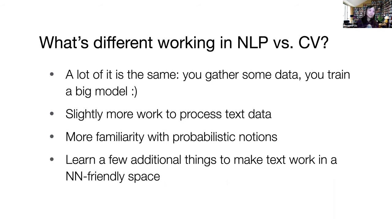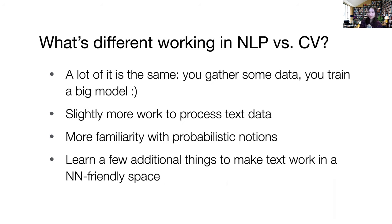A lot of it is the same: you gather some data, train a big model, observe a loss curve going down — that's your daily activity. There is slightly more work to process text data, because in vision we're lucky that images come in RGB format and already exist as numbers you can easily do matrix multiplication with. Text comes in as a string of characters, so you have to do extra work to make the computer able to read it.